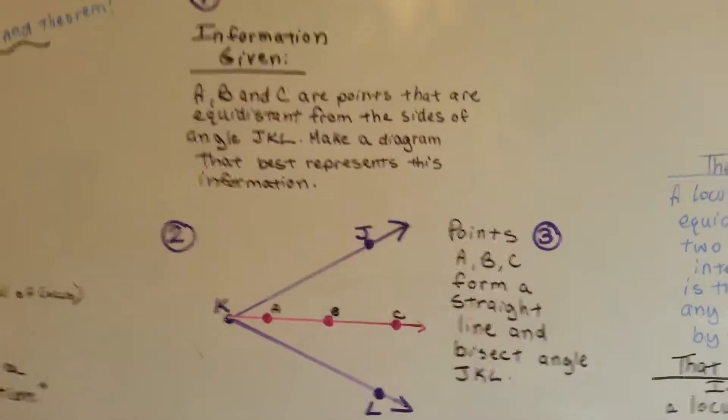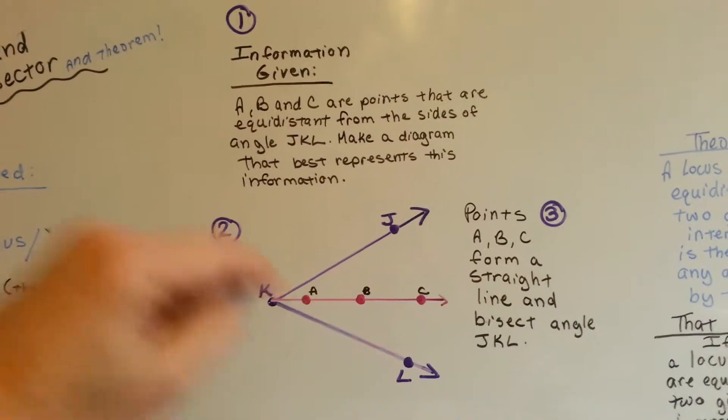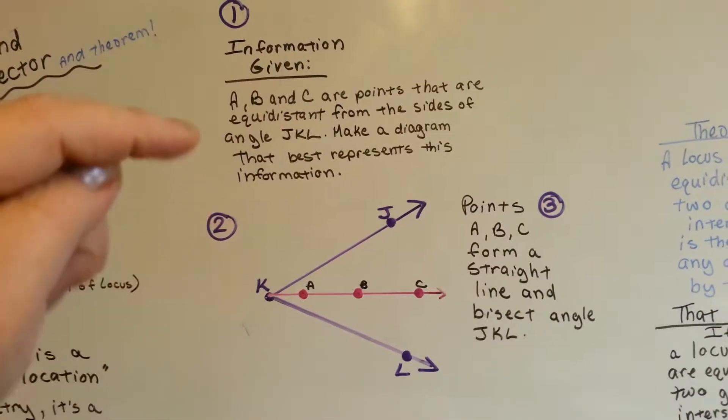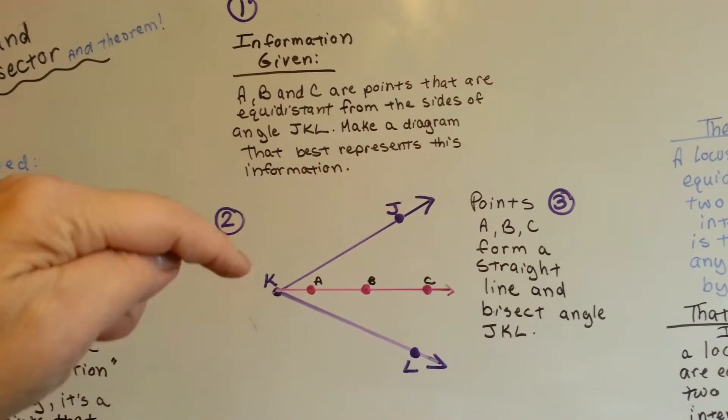So now you can see my drawing completely. One, two, three. Number one is the information given. A, B, C are points. Well, right here, see?